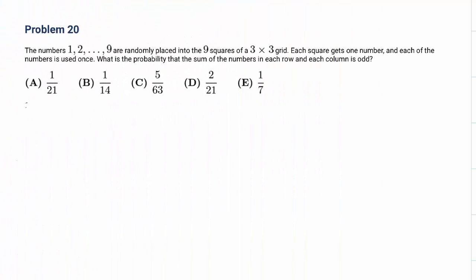Hi, this is question number 30. The numbers 1 to 9 are placed into 9 squares of a 3 by 3 grid. The question is: what is the probability that the sum of the numbers in each row and each column is odd?